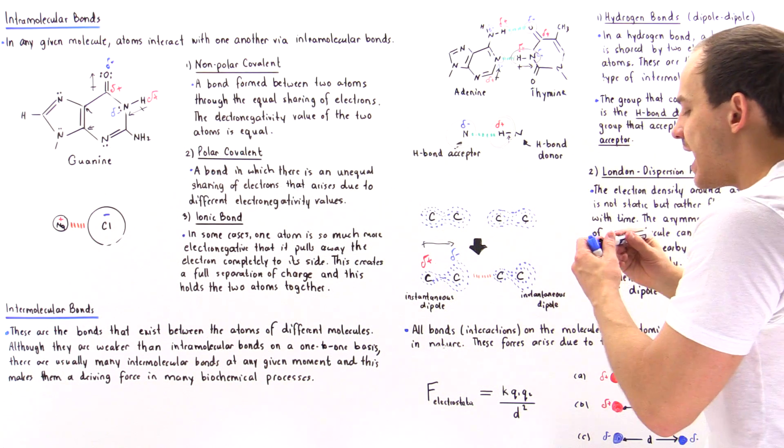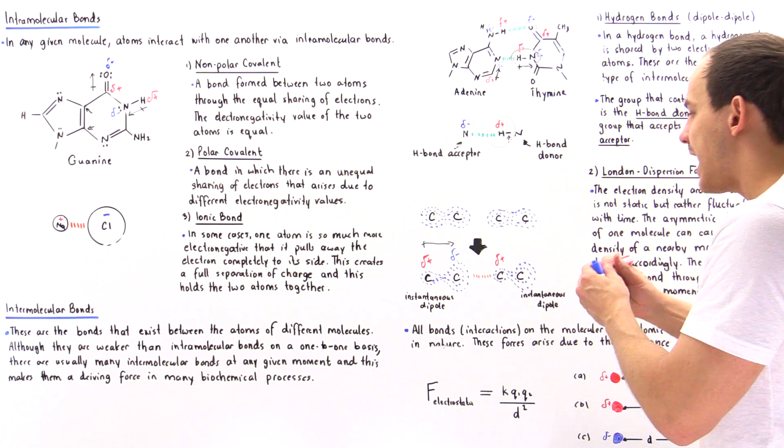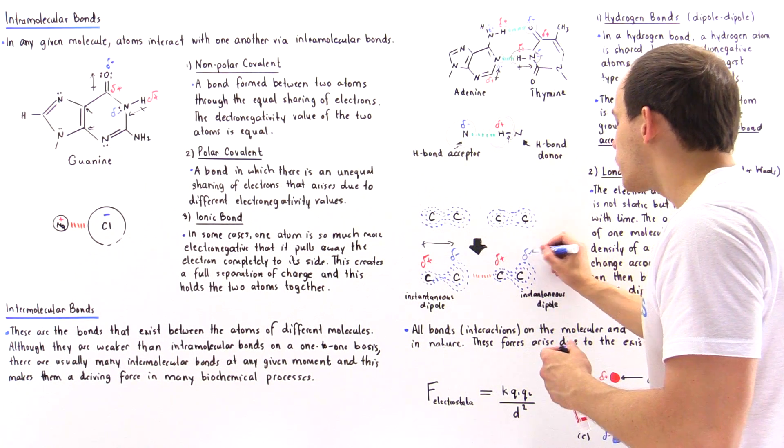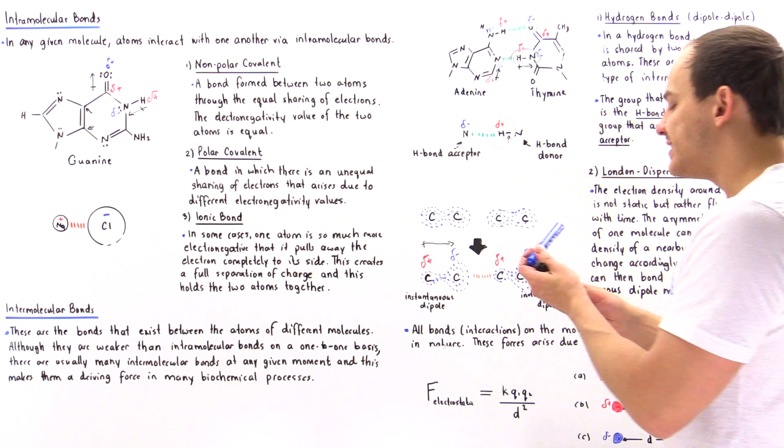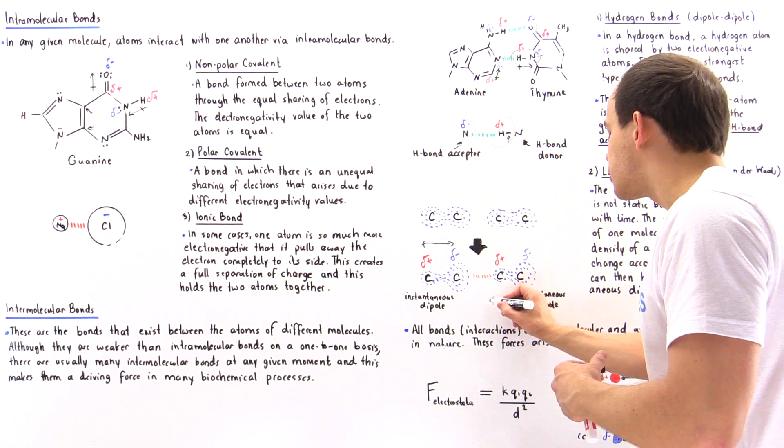This moves the electrons, forming a partial positive charge here and a partial negative charge there, creating an instantaneous dipole moment that points in this general direction.